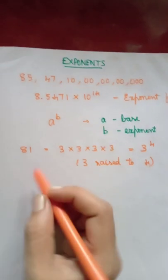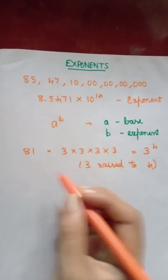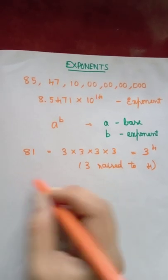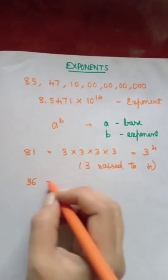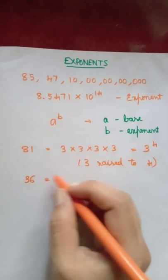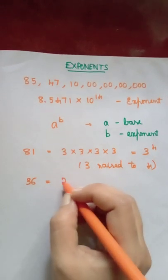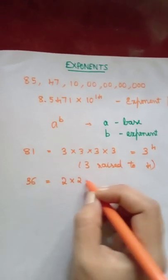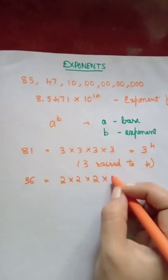And if you have any number 36, you can write it as multiples of 2. See, 2 into 2 is 4, 4 into 2 is 8, 8 into 2 is...